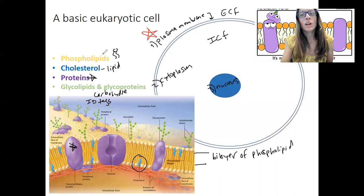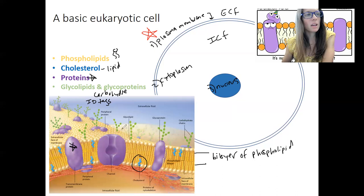The glycocalyx functions to identify self from non-self, provides literal fuzzy protection, and enables cell adhesion — these glycocalyx cells can bind to and adhere to other cells. They're also very important for transplant and blood donation compatibility, which we will talk about a little bit.